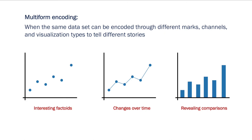There's a related idea here, which is multi-form encoding. Multi-form encoding means we can take the same dataset and encode it through different marks and channels to produce different kinds of visualizations. Each of those visualizations uses the same data, but they differ in the kind of narrative that they tell. So in these three examples here — the exact same data, exact same values — in the first example with isolated points, maybe the narrative is about interesting factoids. If we draw a line between those points, now we're showing changes over time. If we turn those points into bars, we're doing a revealing-comparisons kind of task.